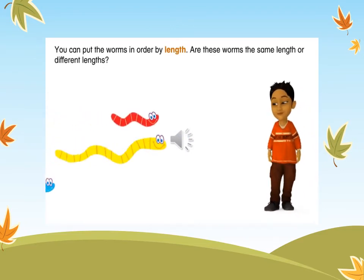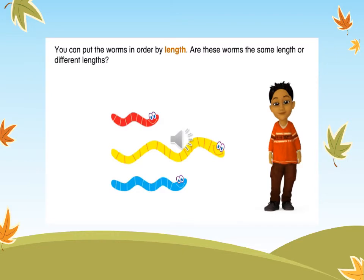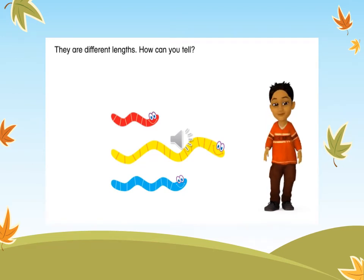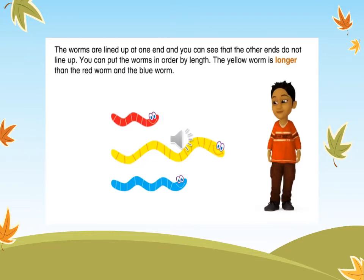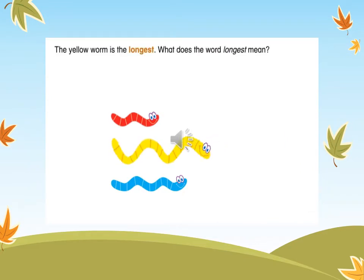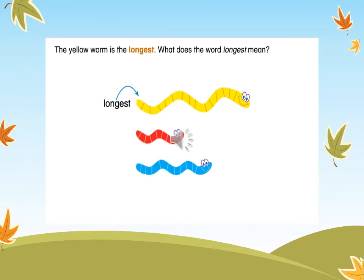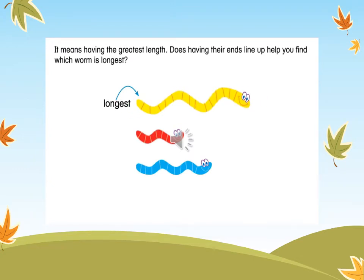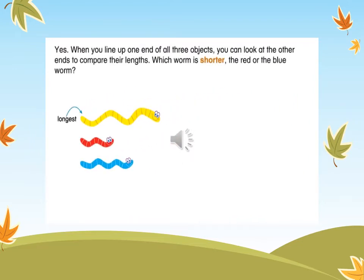You can put the worms in order by length. Are these worms the same length or different lengths? They are different lengths — the worms are lined up at one end, and you can see that the other ends do not line up. The yellow worm is longer than the red worm and the blue worm. The yellow worm is the longest. What does longest mean? It means having the greatest length. When you line up one end of all three objects, you can look at the other ends to compare their lengths.